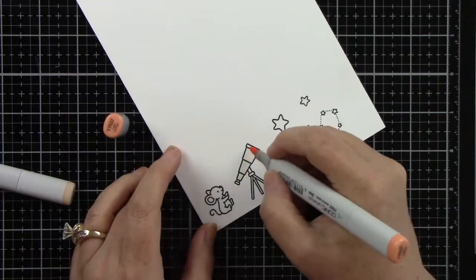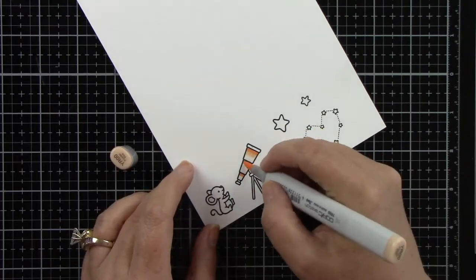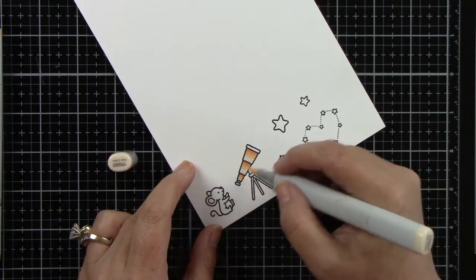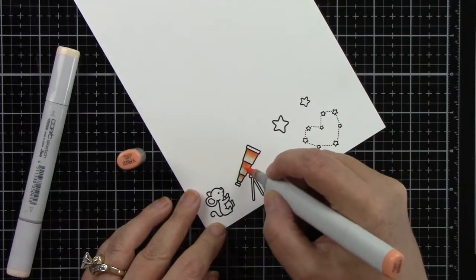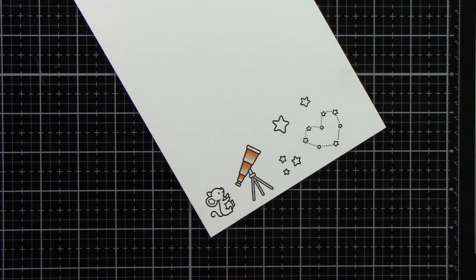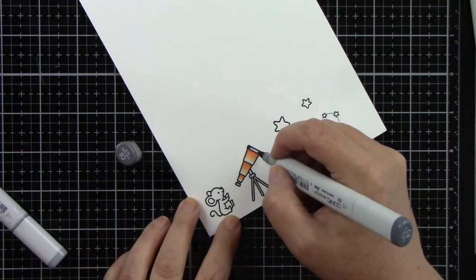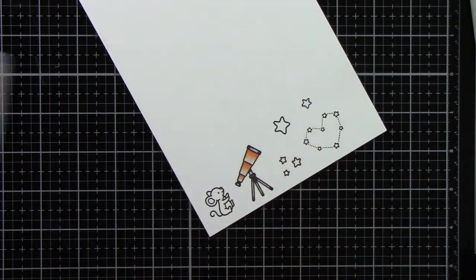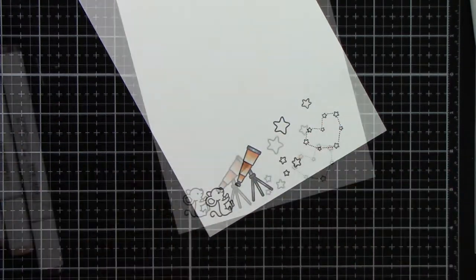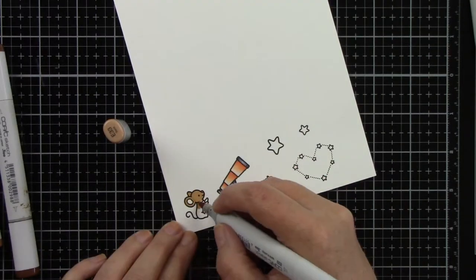So first I'm going to start with coloring my images for this scene. I am using Lawn Fawn's Superstar and Upon a Star stamps and coordinating dies. I'm using Copic markers to color these images. And so for the cute little telescope, I'm using YR0000, then 00, and then 02.